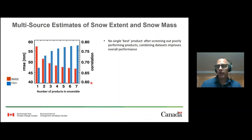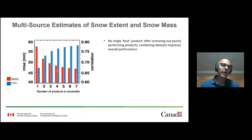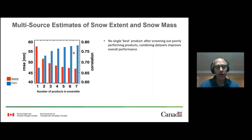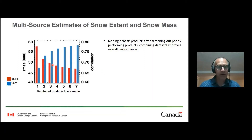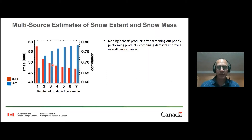We built up an ensemble of snowmass products with different sizes to test how increasing the number of products affects performance. As we increase the number of products in the ensemble, dropping out the poor-performing products, we get a reduction in RMSE and an increase in correlation compared to snow course data. This suggests error cancellation and bias cancellation between different products — as you average them together, you get better performance. This provides compelling evidence that averaging a number of largely independent snowmass datasets together, probably at least three or four products, gives us better results than any single product.